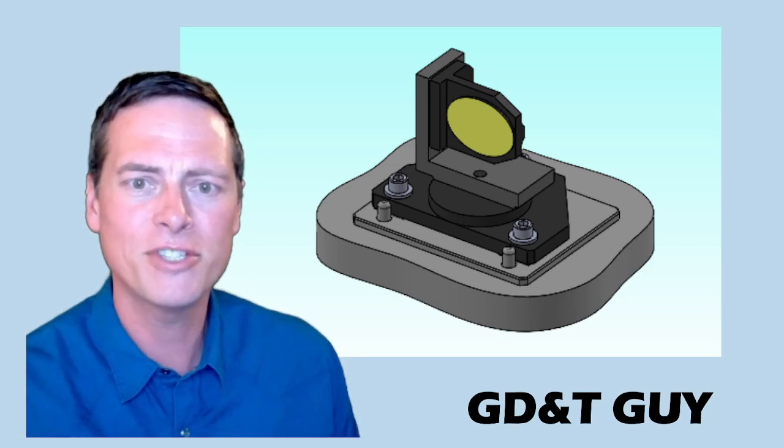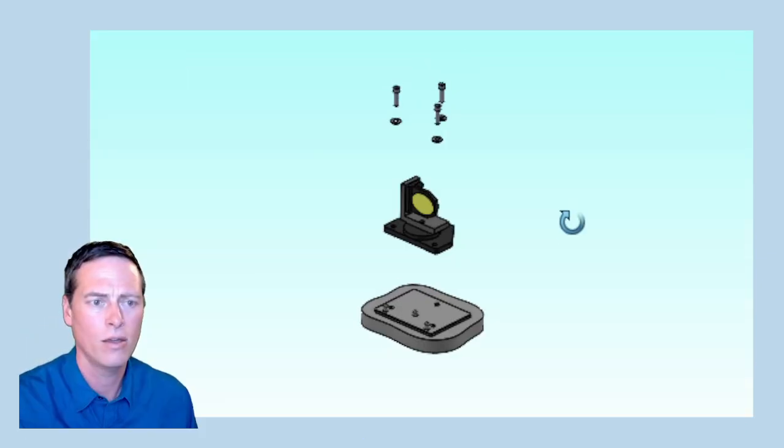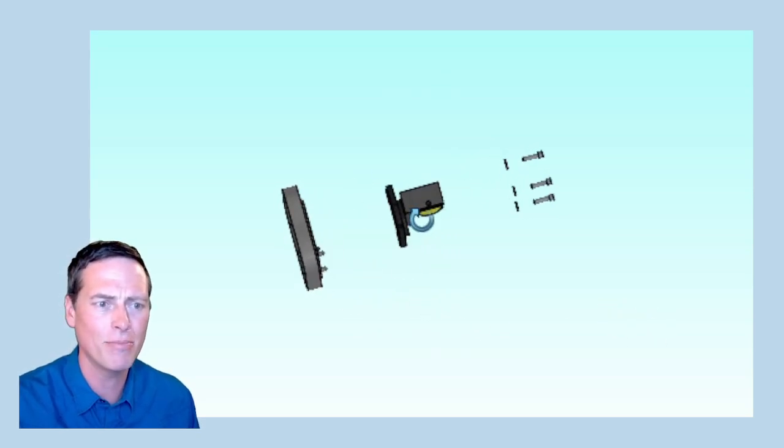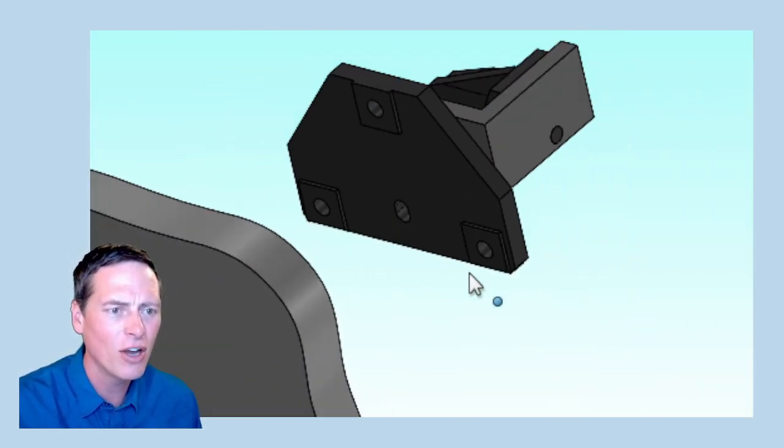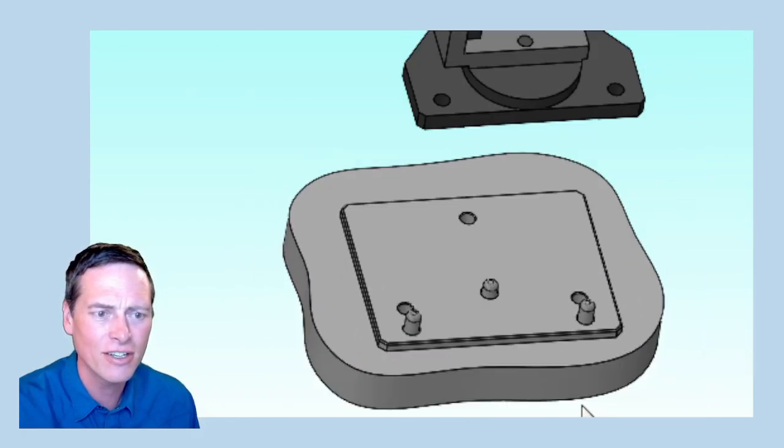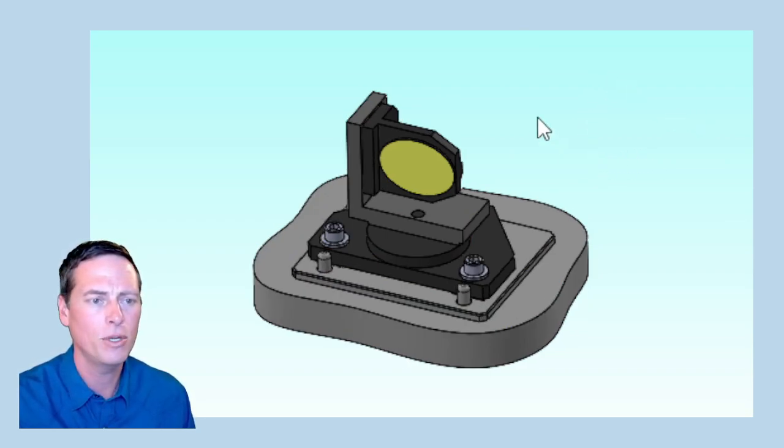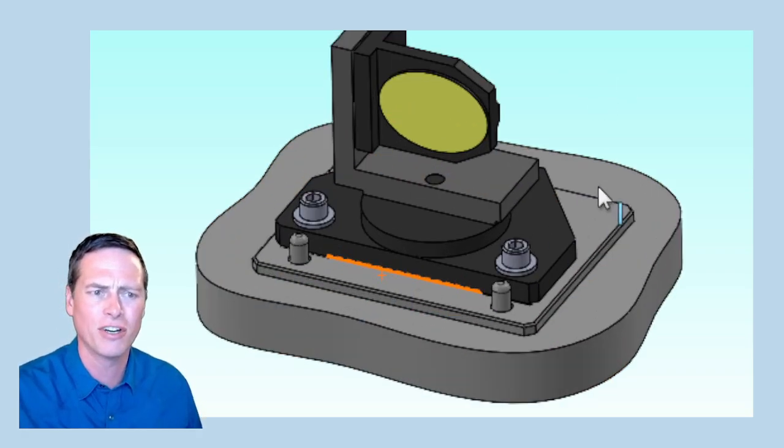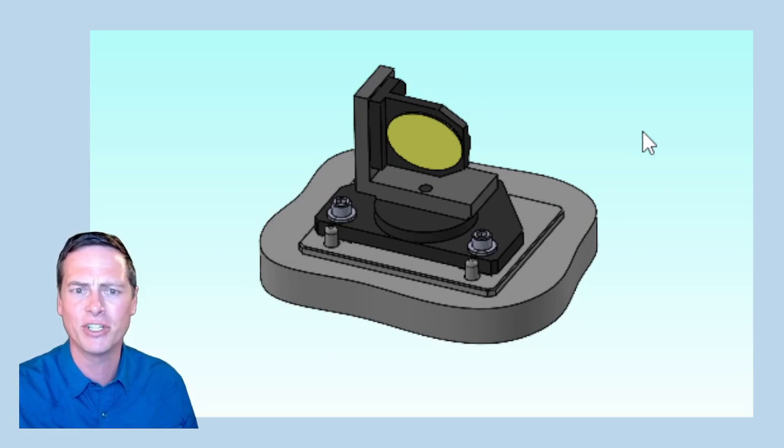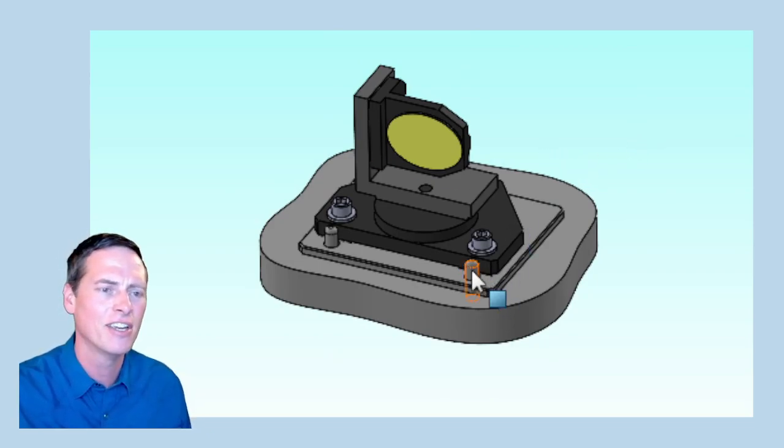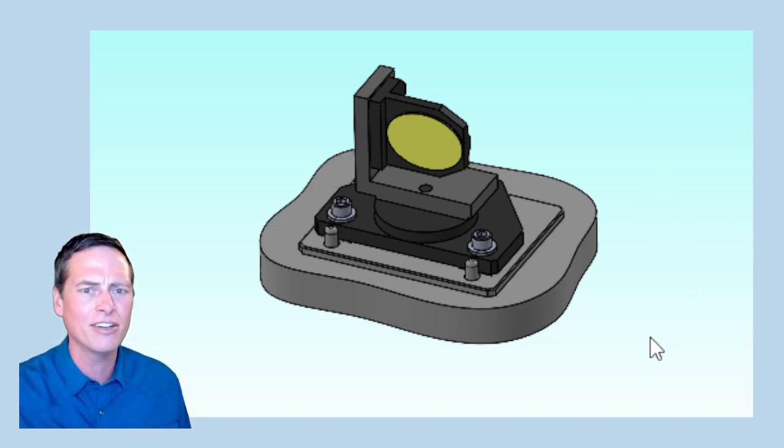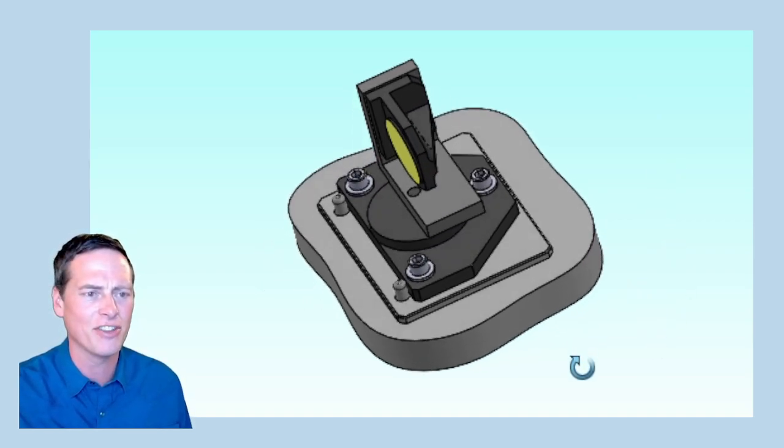But what if we use the pins not as features of size? With this interface, we place the mirror assembly down with this slot over a little center dowel pin. Then we load it up against these two dowel pins and we tighten the screws. We should end up with a highly repeatable angularity for this mount. Sure, the tertiary location is still controlled by features of size, the slot and the pin. But any allowance there should produce only minor secondary deviations on the angle of the mirror.